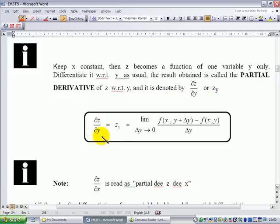So partial dz/dy or z_y is the limit as Δy goes to zero of [f(x, y + Δy) - f(x,y)]/Δy. Δy is the change in y while x is fixed. Notice that this is how we read them: ∂z/∂x is sometimes read as partial dz/dx.